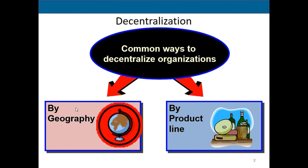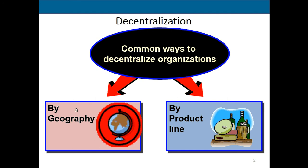A common way to decentralize organizations is by geography or by product line, but what about thinking in terms of departments? Think about a big box store like Walmart. One person can't really manage every department in Walmart. A store like Walmart can't run with just one person in charge of everything and having to answer every single question. Instead, they departmentalize and have managers in different departments, and we need to figure out how to account for these different departments appropriately.